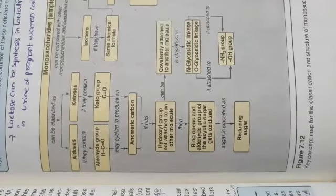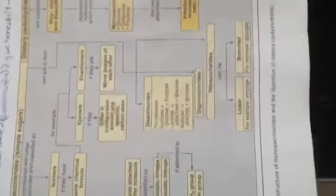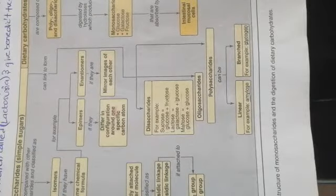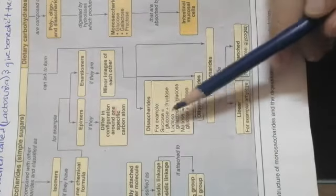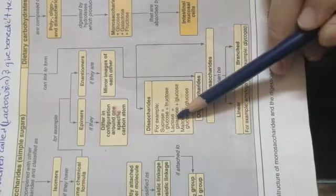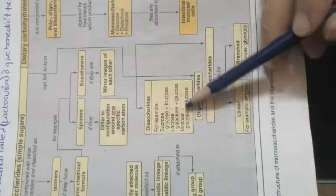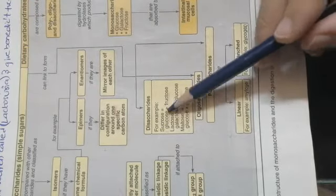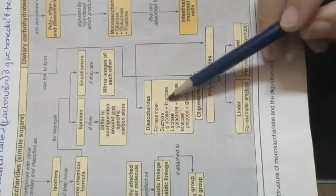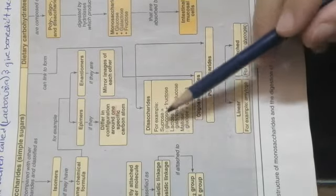Coming to the monosaccharides — their isomers and different types of isomers. The second classification according to carbon number is disaccharides and oligosaccharides. Disaccharides consist of two molecules of glucose combined together. For example, sucrose contains glucose plus fructose; lactose contains glucose plus galactose; and maltose contains glucose and glucose. So two molecules of any monosaccharide — glucose, fructose, or galactose — combined will form a disaccharide. Examples of disaccharides are sucrose, lactose, and maltose.